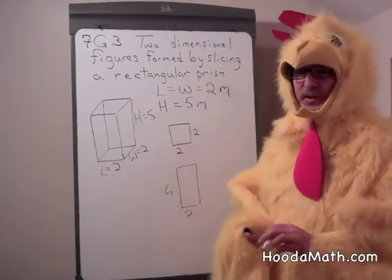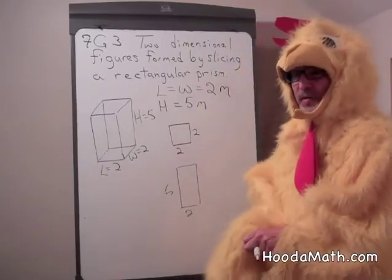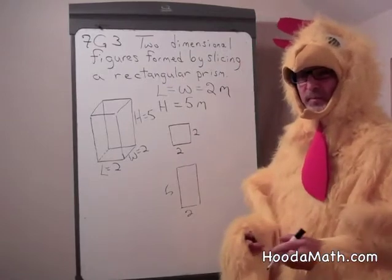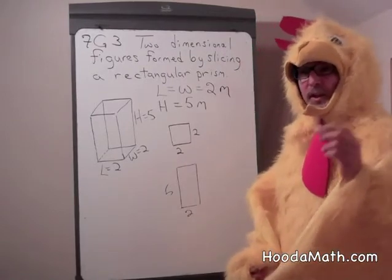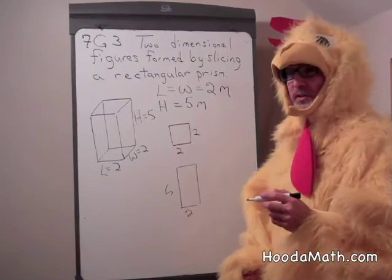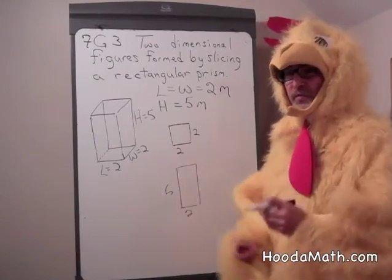Now, the use of this is that you could find the surface area because a rectangular prism is composed of six faces.